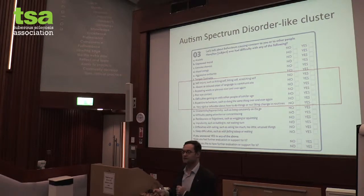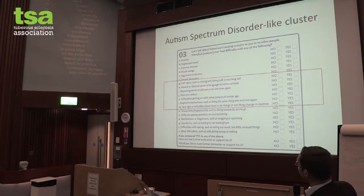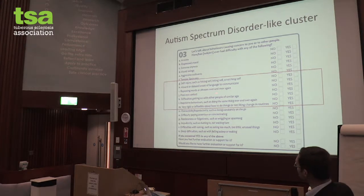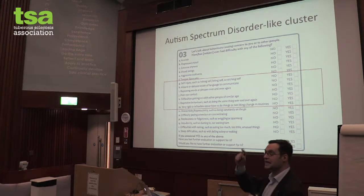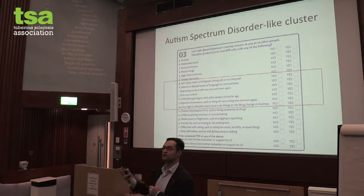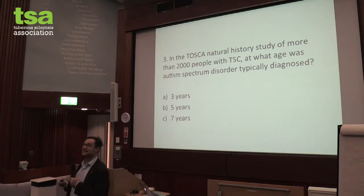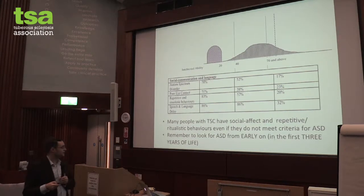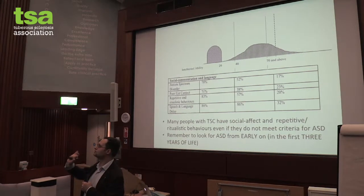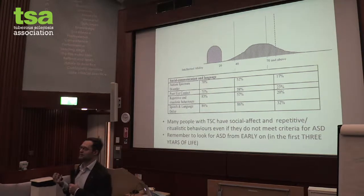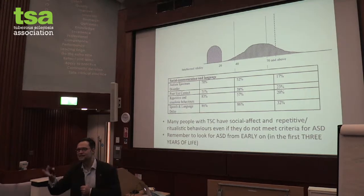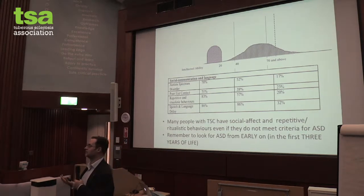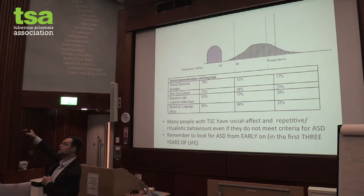ASD: these are the typical things on the checklist for autism spectrum disorder — self-injury, language issues, repeating words and phrases, eye contact, getting on with other people, the social piece, repetitive behaviours, very rigid or inflexible behaviour. The more of them you have, the more likely you are to be at risk of an autism spectrum disorder. Age seven was the typical age kids with TSC were diagnosed in our expert clinics, even though we know half of them had the risk of an ASD diagnosis. Don't fear looking for these things.